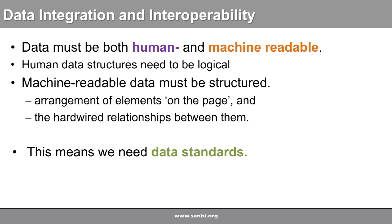When humans work with data sets, it's relatively easy to figure things out. You can look at different data sets, start comparing them, and start unifying those data sets into one, but it is extremely painful. Machines can't do that at all. For data to be machine readable, the structure of that data needs to be the same. You need to pre-define the relationships between different data elements — and that basically means you need a data standard. As a community, we suck at implementing data standards.